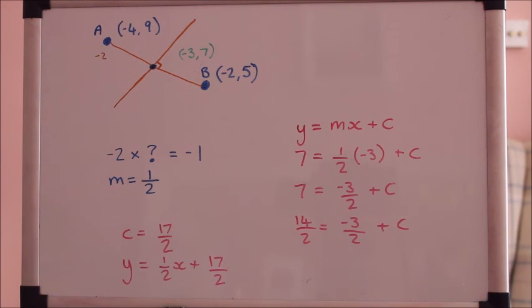Now it looks a little bit messy because it's got fractions in it so why don't we get rid of that denominator. So we'll have 2y equals that will just be x now plus 17.